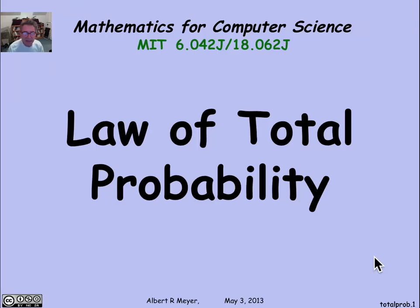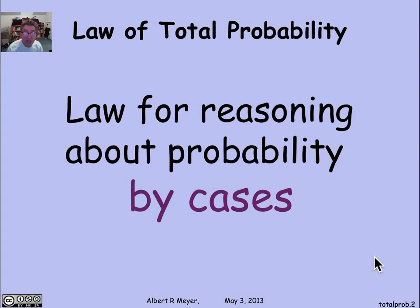The law of total probability is another probability law that gives you a way to reason about cases, which we've seen is a fundamental technique for dealing with all sorts of problems. The point of cases is that you can prove a complicated thing by breaking it up into, if you're lucky, easy subcases.